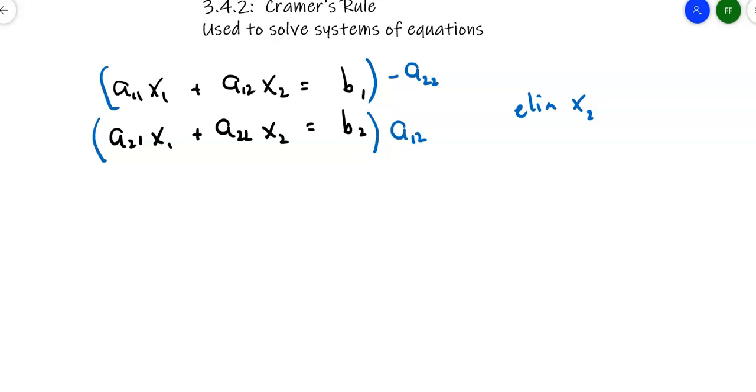When I do that, what's on the top? The top has a negative a11, a22x1. The next term will then be minus a12, a22x2. And don't forget, the right side gets multiplied also, negative a22b sub 1.